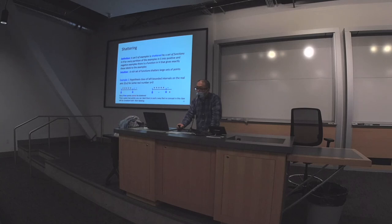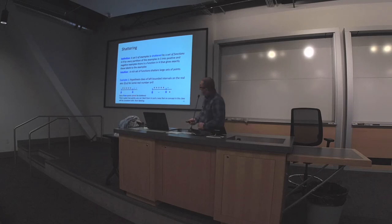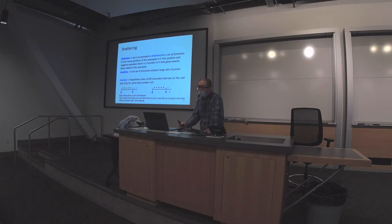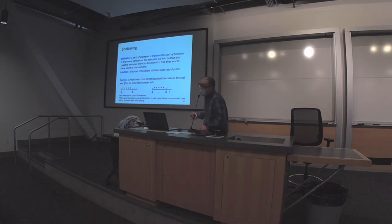A student asked about distinguishing shattering from lazy learners. Right now we're not talking about how to find a hypothesis — lazy learners are about how to search the hypothesis space. Here we're asking: given this hypothesis space, does there exist a hypothesis that correctly labels all the points? Even for the existence statement, with left-bounded intervals and two points labeled as negative-positive, throughout the whole hypothesis space you won't find any instance that correctly predicts both labels.